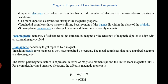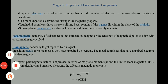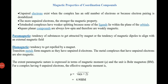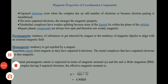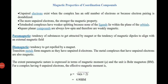Paramagnetic can be defined as the tendency of a substance to get attracted by a magnet, or the tendency of magnetic dipoles to align with respect to an external magnetic field. Similarly, diamagnetic means the tendency to get repelled by the magnet, due to opposite charges. The extent of the paramagnetic nature of any complex is expressed in terms of magnetic moment, that is μ, and its unit is represented in Bohr Magneton (BM).